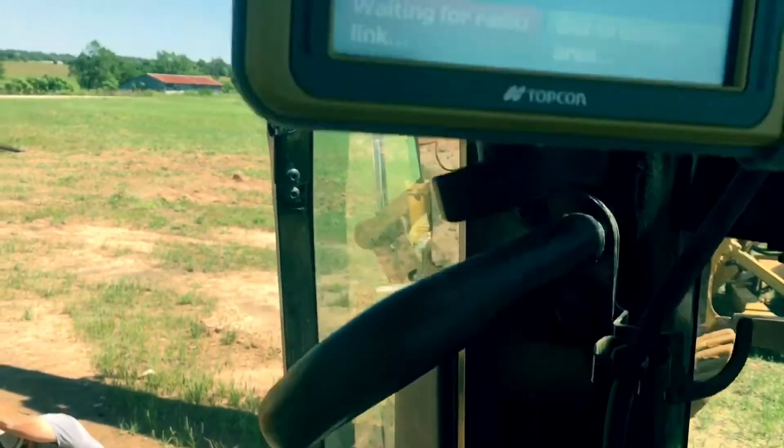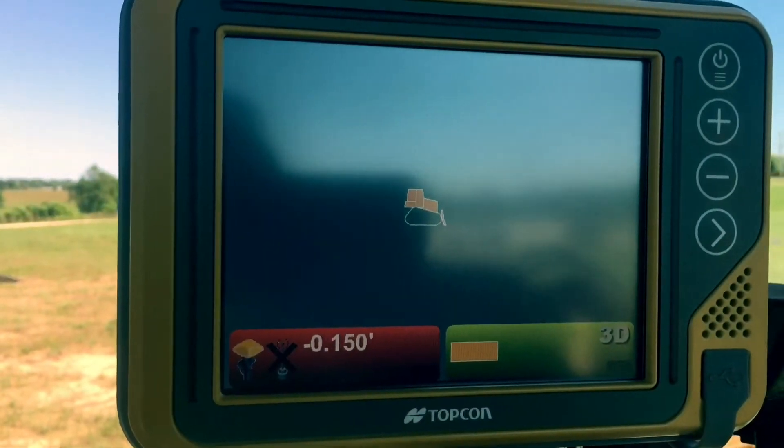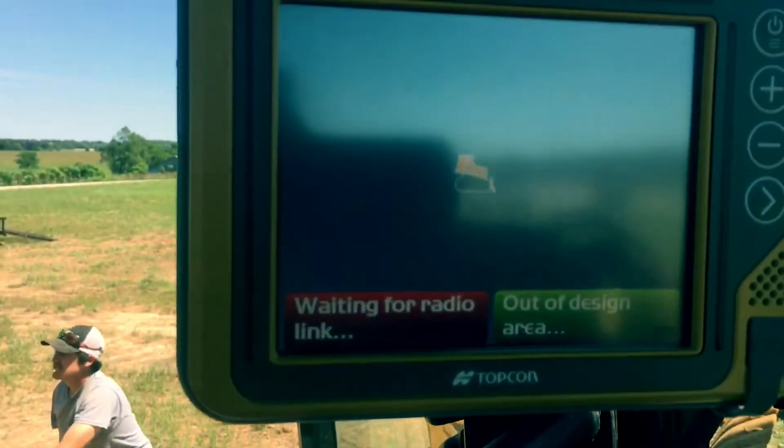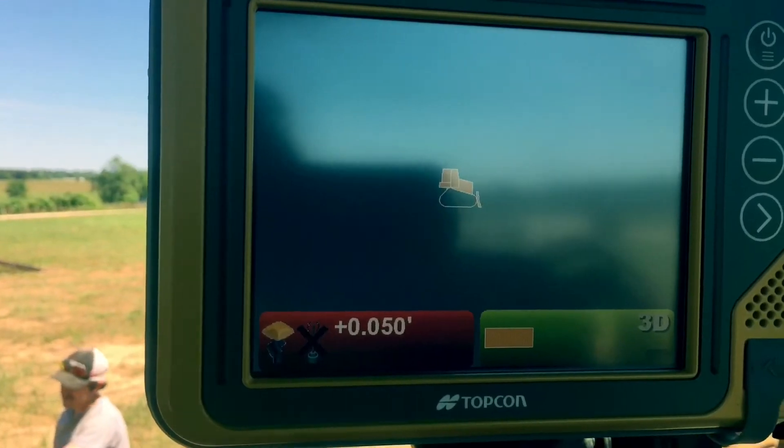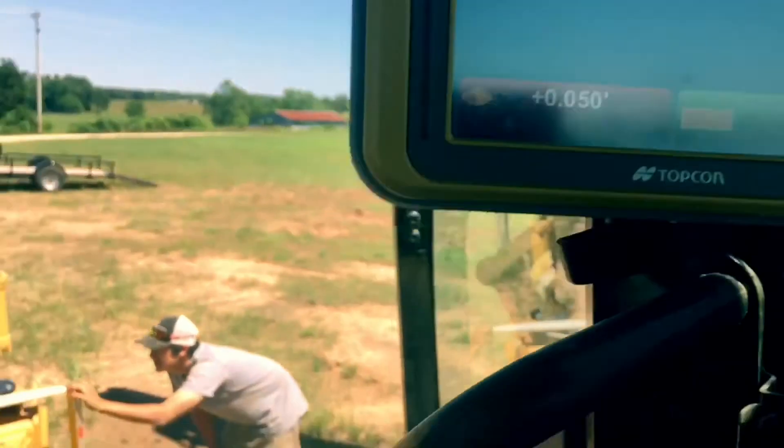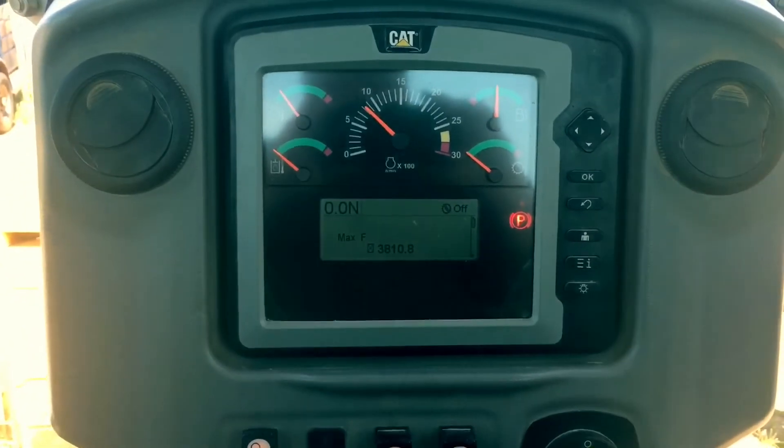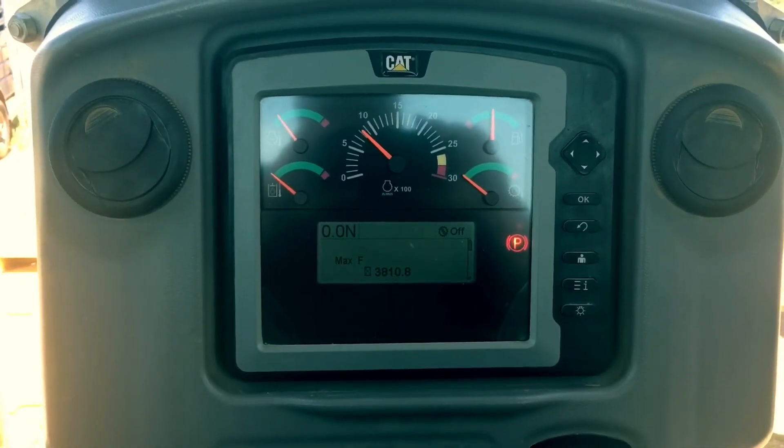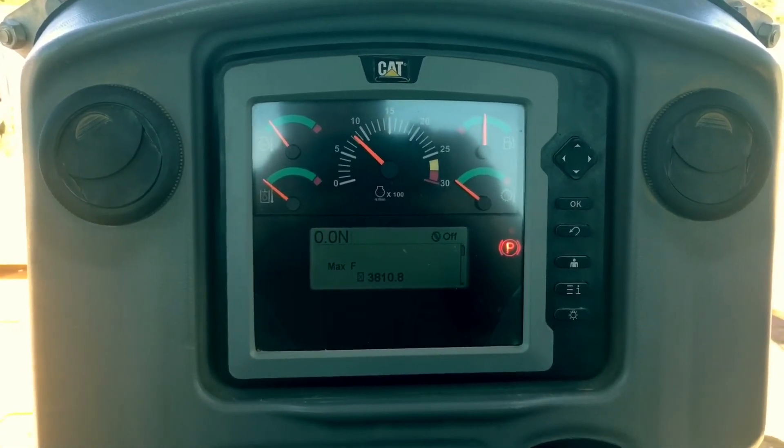Trigger depressed, left button increment, right button decrement. So we've got full function of our buttons and trigger. We have no error codes on the dash. All is good. Thanks, guys. We'll see you next time.